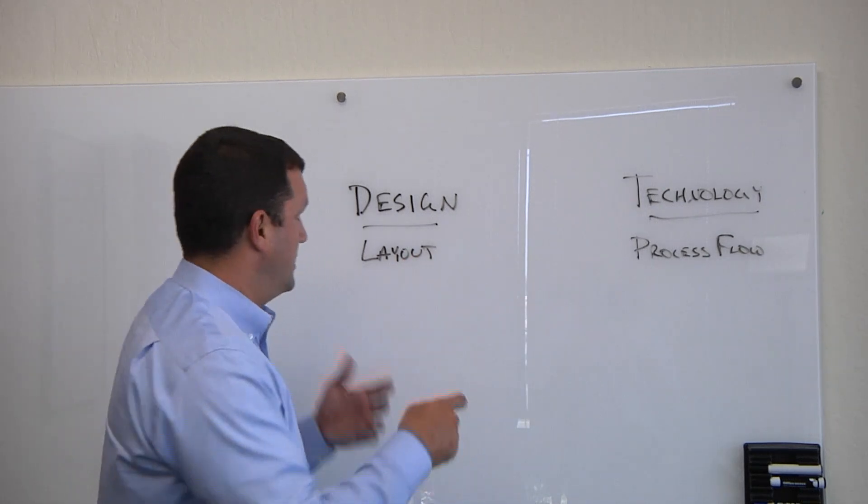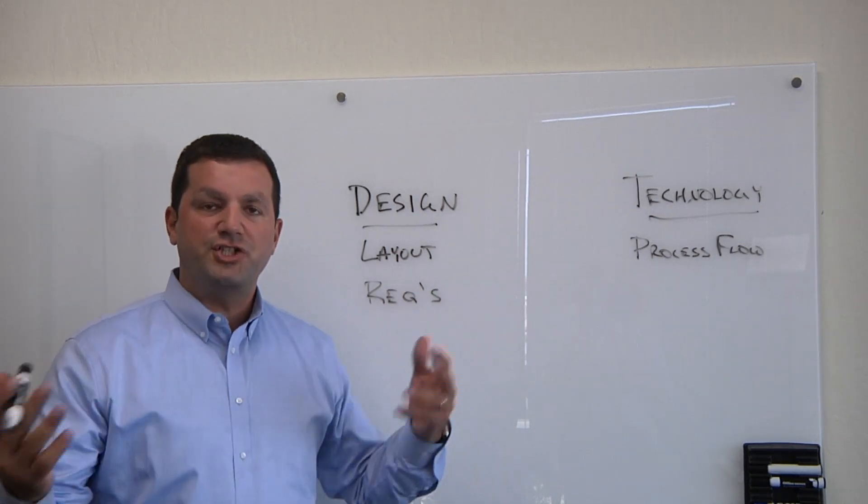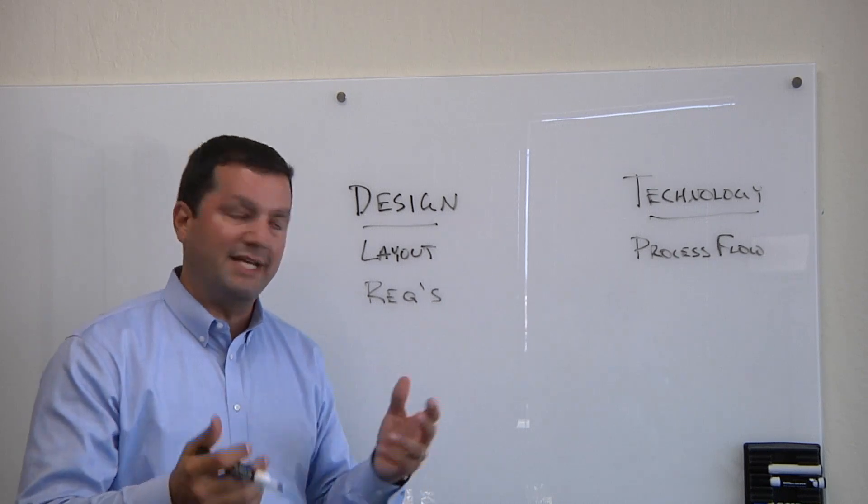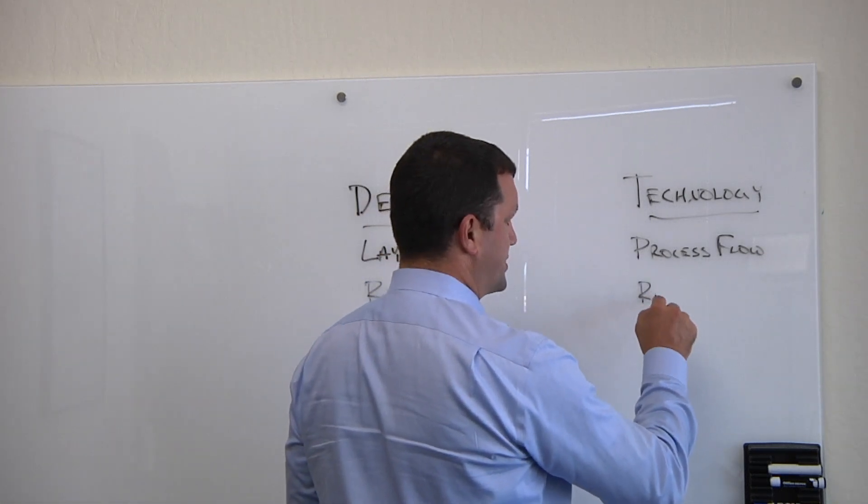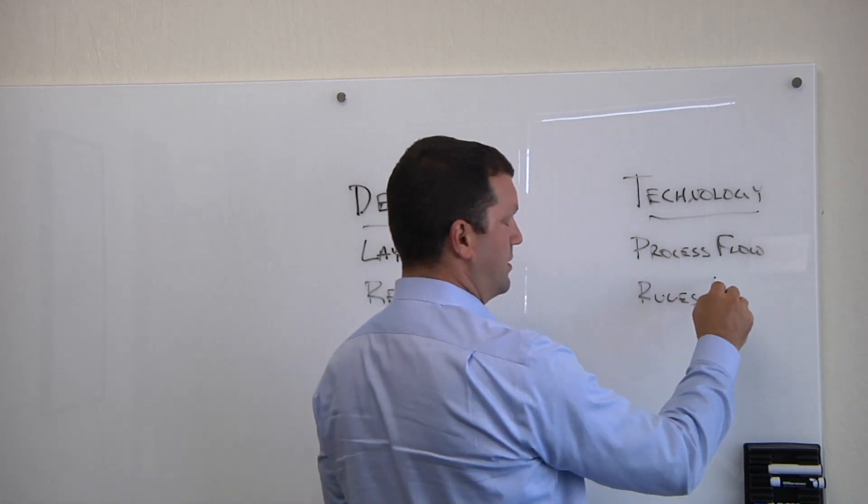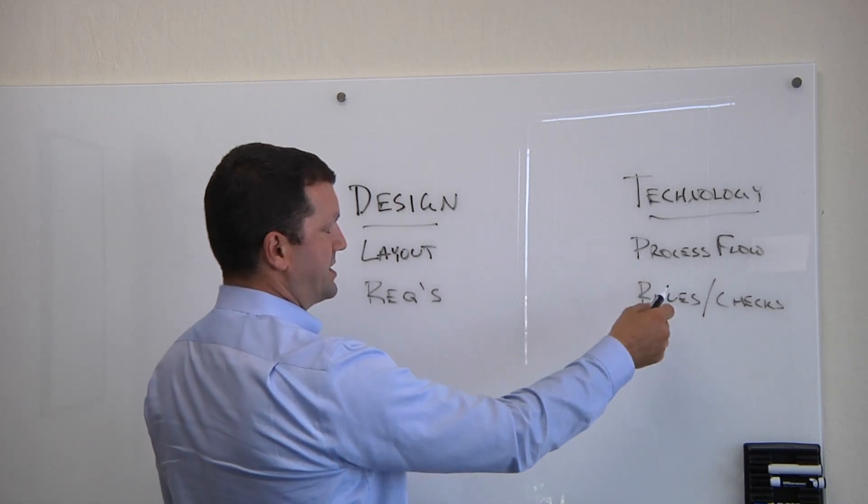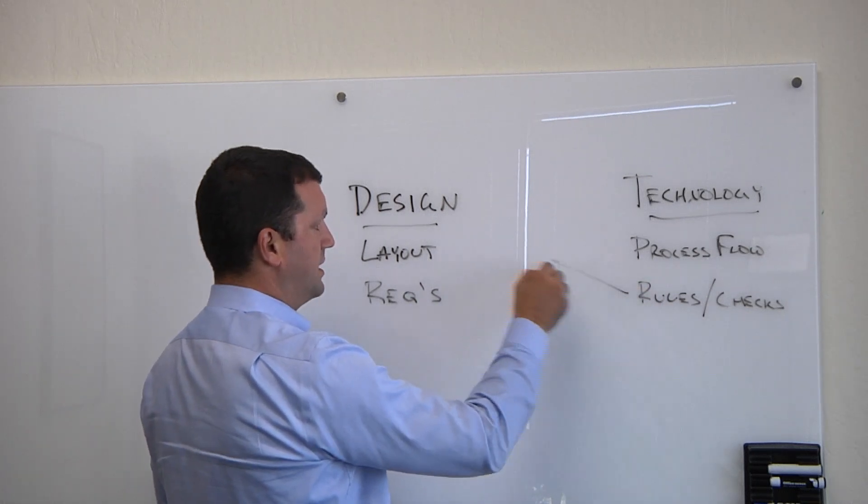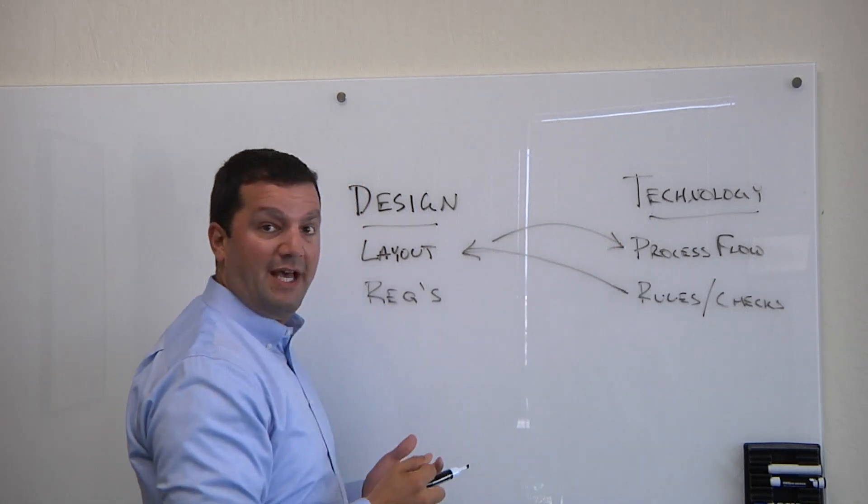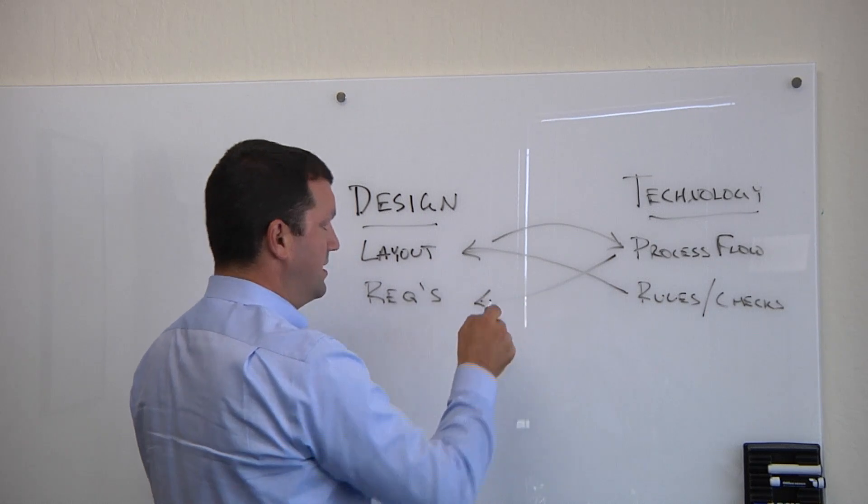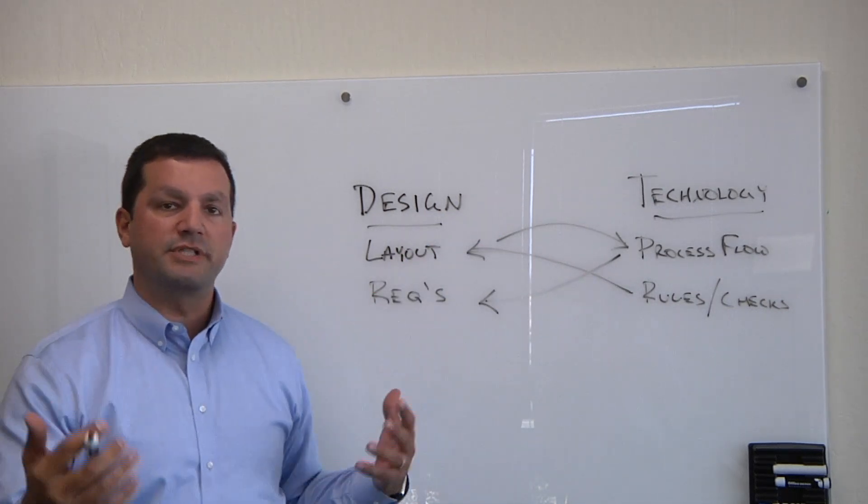The design community has requirements - density, shapes, different patterns, to make their chip have market value. The technology responds by producing rules or checks to make sure what you design is going to yield. Once you understand the process flow, you can produce rules. Those rules go to the design community and they make the layout. The layout gets transmitted to the fab, and that chip has to meet the requirements. You have this iterative connection between the key deliverables and requirements of these two communities.